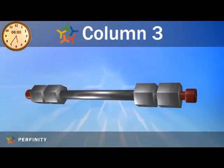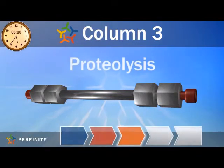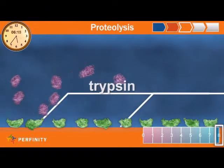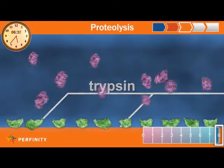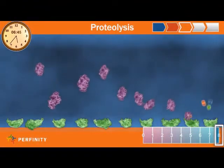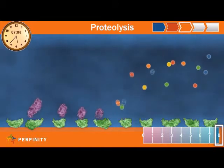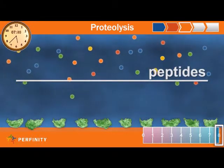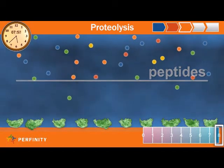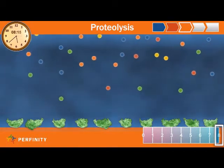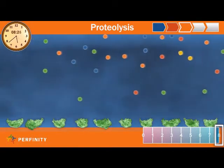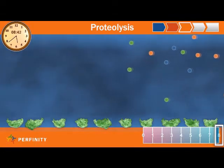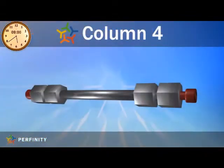Upon completion of the buffer exchange, the sample proceeds to a trypsin column where proteolysis occurs. The proteolysis column uses an immobilized enzyme called trypsin to break proteins apart into more easily identifiable fragments called peptides. Through use of immobilized trypsin, enzymatic autodigestion is prevented, and the sample is exposed to a significant excess of enzyme, resulting in a digestion time between 1 and 5 minutes.